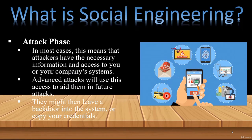The third and final phase begins with the cybercriminals' attack. They have the information needed to implement it — whether a phishing email sent to various members of the organization or infiltrating the organization by impersonating a third-party person that no one would think to notice. Their attack can leave malware and viruses behind, allowing them to further their agenda at a later time, including tools like ransomware.